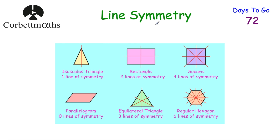Now let's look at symmetry — line symmetry and rotational symmetry. If a shape has a line of symmetry, folding it along that line lands it on itself. An isosceles triangle has one line of symmetry. A rectangle has two. A square has four — vertical, horizontal, and both diagonals. A parallelogram has none. An equilateral triangle has three, a regular hexagon has six, and a regular pentagon has five lines of symmetry.